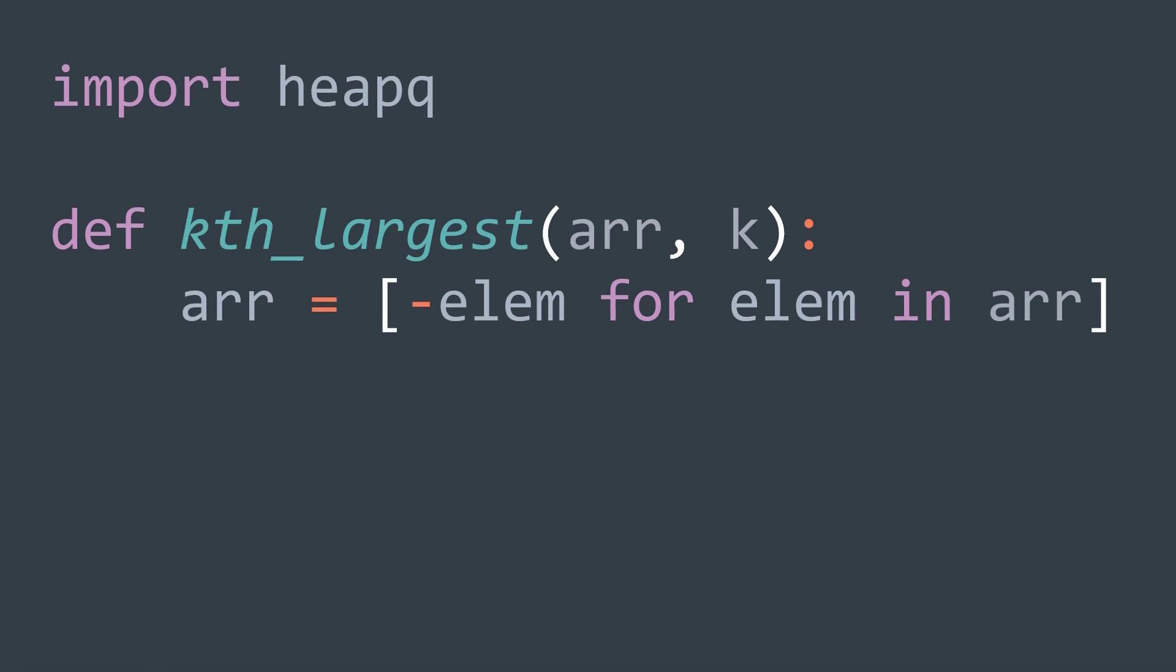In python, we have the heap queue module, but the problem is that it's implemented with a min heap, not a max heap. So at the top, we will find the smallest element, not the greatest. To counter that, we just multiply values by minus 1 to reverse the order.